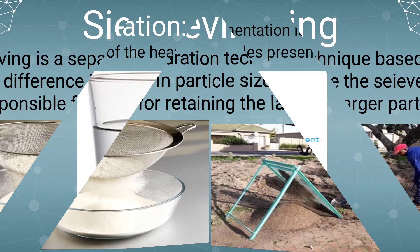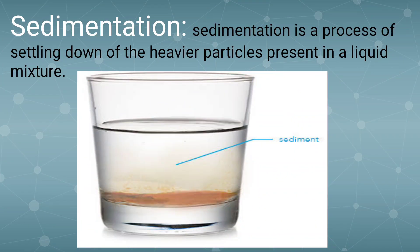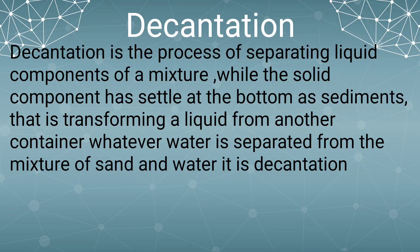When we can't separate particles using those three methods, we can use sedimentation, decantation, or filtration. In sedimentation, when we add water to a mixture of components, the heavier component settles down at the bottom of the vessel. The lighter component mixes with the water above. Settling of the heavier component is called sedimentation, and removing the lighter components along with the water is called decantation.